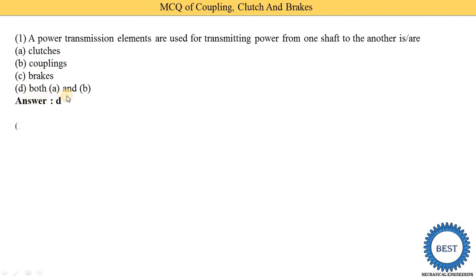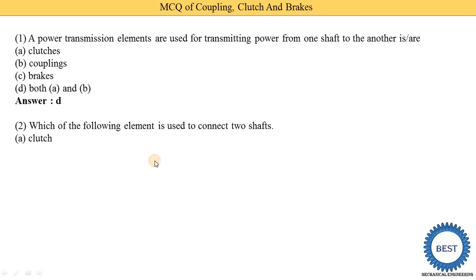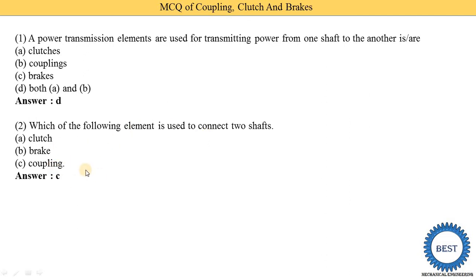Which of the following elements is used to connect two shafts? Option A: clutch, option B: brake, option C: coupling. The answer is coupling. When we connect two shafts, they make a couple — two shafts are joined together, that's why it is called coupling. Couple means two things joined, so when two shafts are connected, it is called coupling.